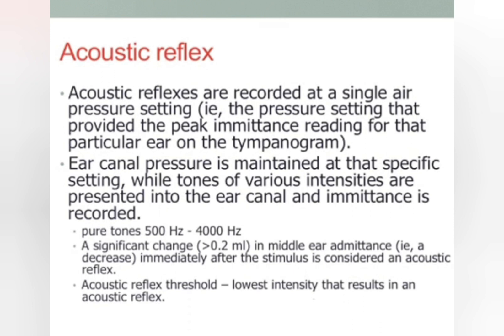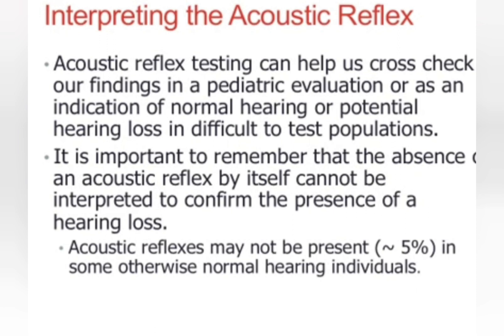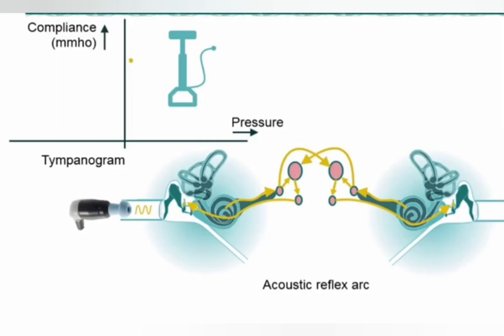The acoustic reflex threshold is the lowest intensity that results in the acoustic reflex. Once you complete normal tympanometry, in the same setting you can proceed with measurement of the acoustic reflex by giving a high sound around 85 dB above the hearing threshold level. This results in contraction of the stapedius muscle, which stiffens the tympanic membrane and is recorded. The acoustic reflex may normally be absent in 5% of the population, but it can be useful in children or malingering patients.